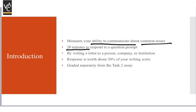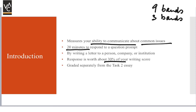You write to a person, a company, or an institution depending on the question you receive, and we are going to cover that in detail in this video. Remember, your Task 1 response is just 30% of your writing score. Of the 9 bands in IELTS, this answer corresponds to about 30%, which is 3 bands. The remaining 6 bands come from Writing Task 2, which is the essay, and we will discuss that separately in another video.